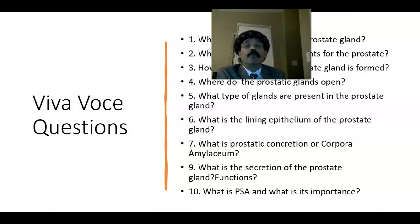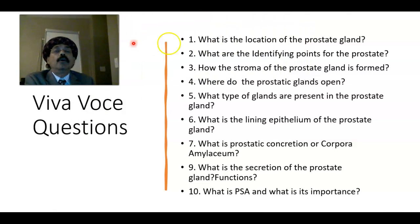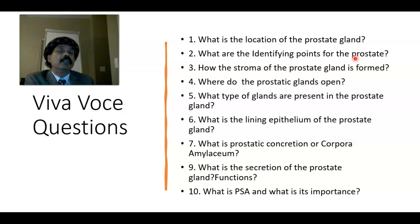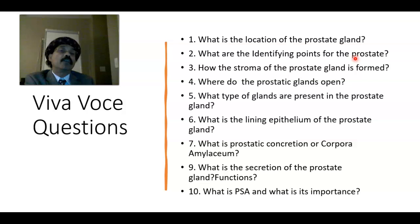Now we will answer some viva voce questions. What is the location of the prostate gland? It is located below the neck of the bladder. Its size is approximately 2 × 3 × 4 centimeters. What are the identifying points for the prostate? It has a capsule, fibromuscular stroma containing smooth muscle, and glands lined by columnar or pseudostratified columnar epithelium. The glands may contain corpora amylacea or prostatic concretions, especially in specimens from older individuals.